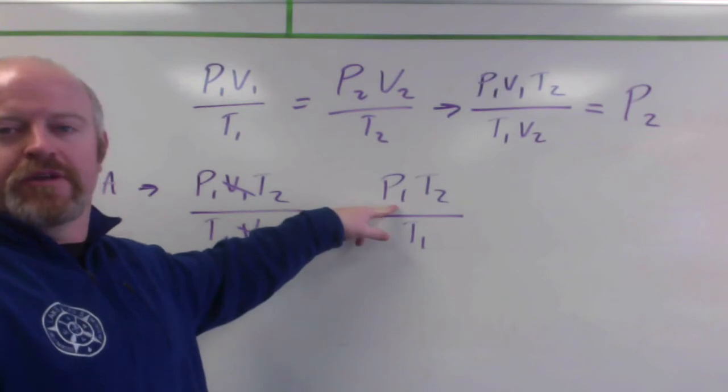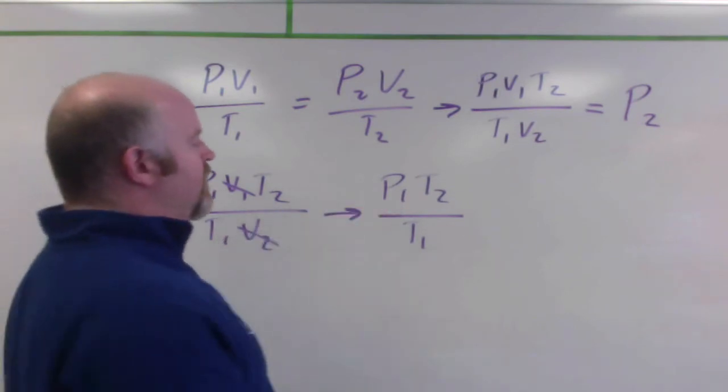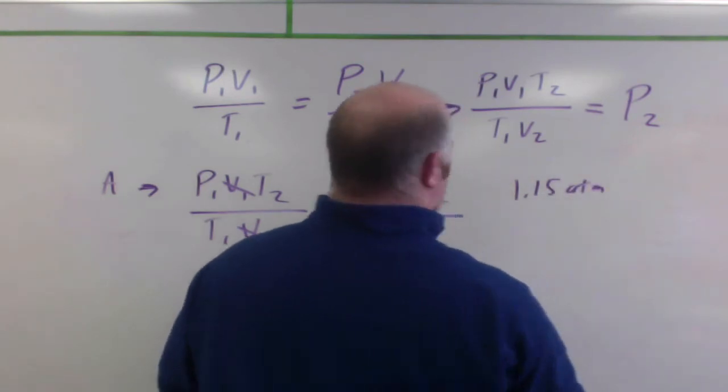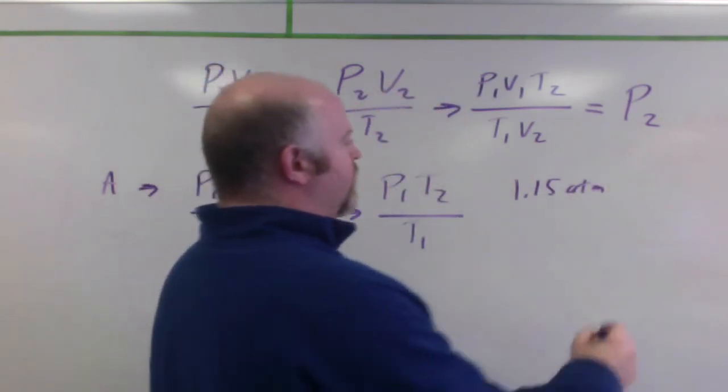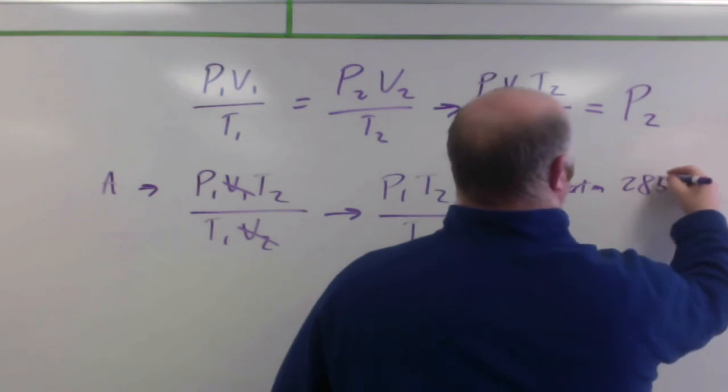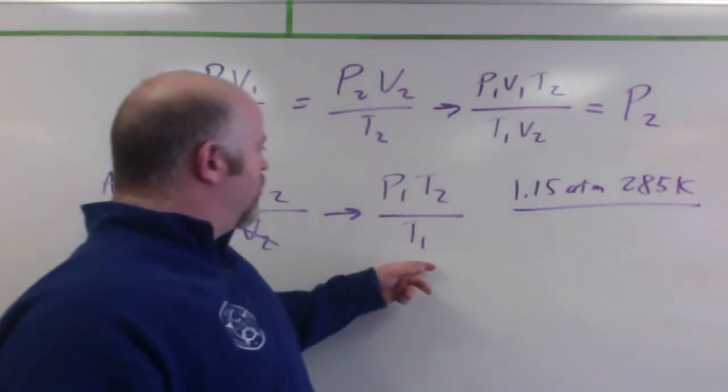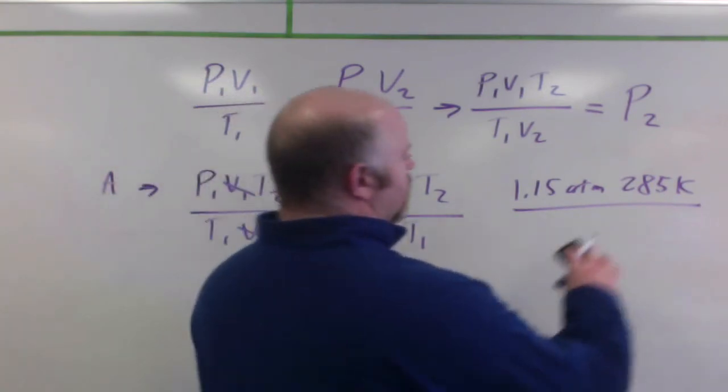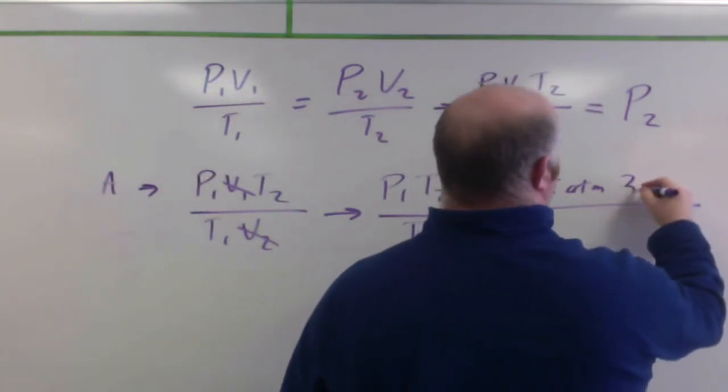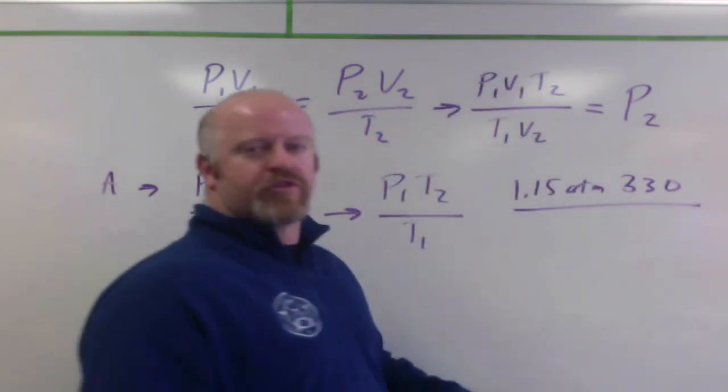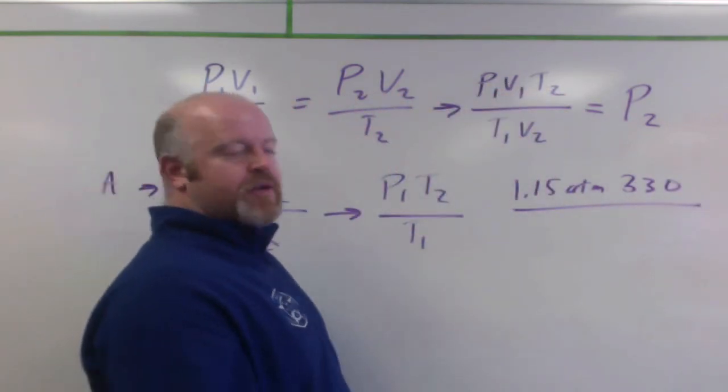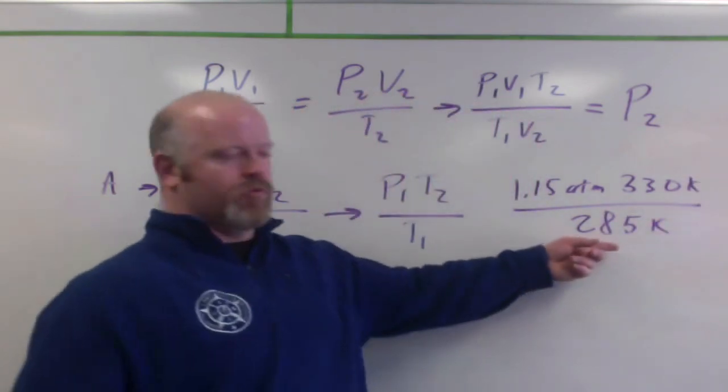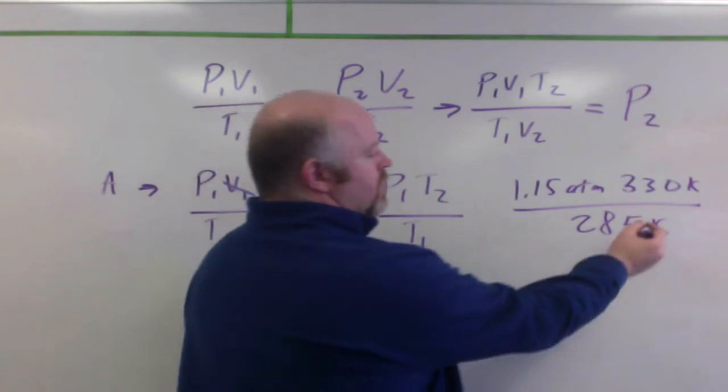So the initial pressure was 1.15 atmospheres. The initial temperature was 285 Kelvin divided by, oops, I want T2, so I want the final temperature there. So our final temperature was 330 Kelvin, my initial temperature was 285 Kelvin. Kelvin cancels, left with atmospheres of pressure, and now we do our math.